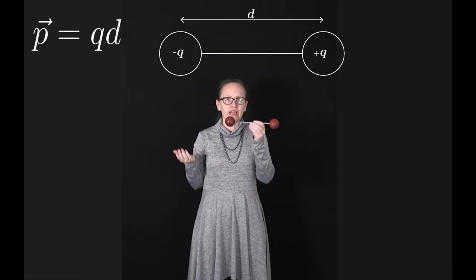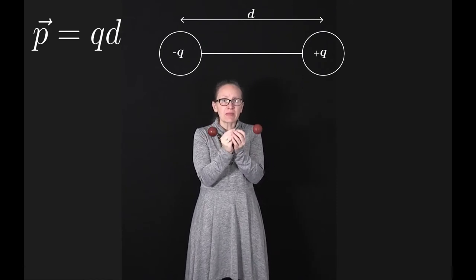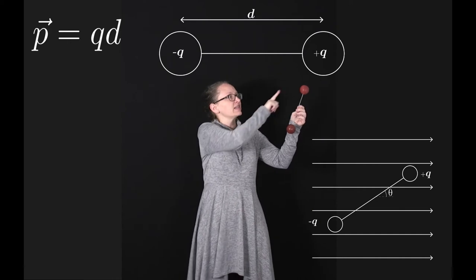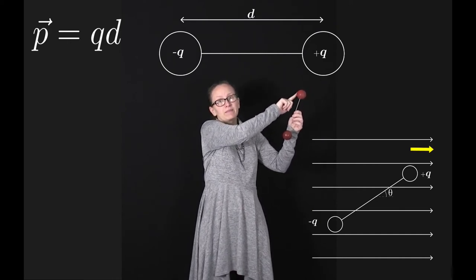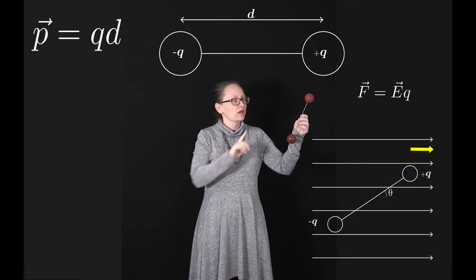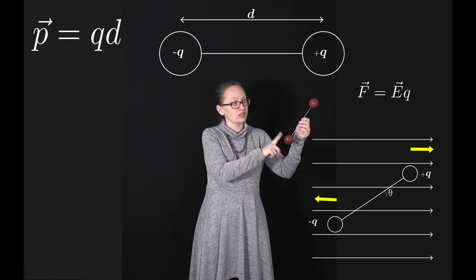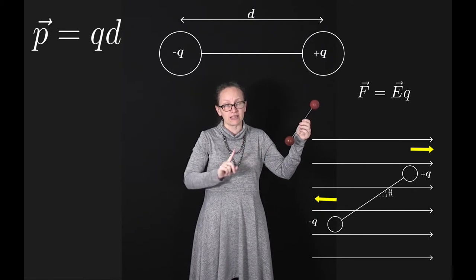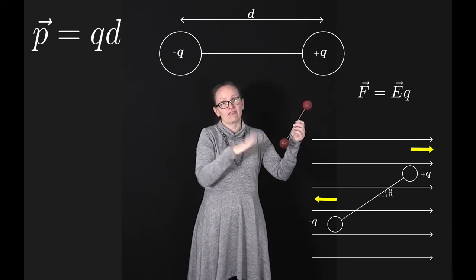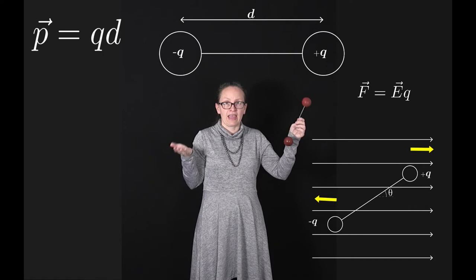Consider our simple dipole — a positive charge and a negative charge separated by a distance d — placed into a uniform electric field. There is a force on the positive charge of magnitude eQ in the direction of the field, and a force on the negative charge of magnitude eQ in the opposite direction. These are equal and opposite forces, so there is no net force on a dipole placed in a uniform electric field.